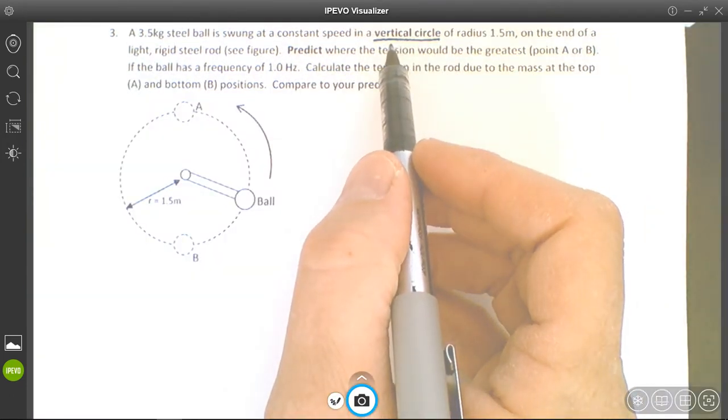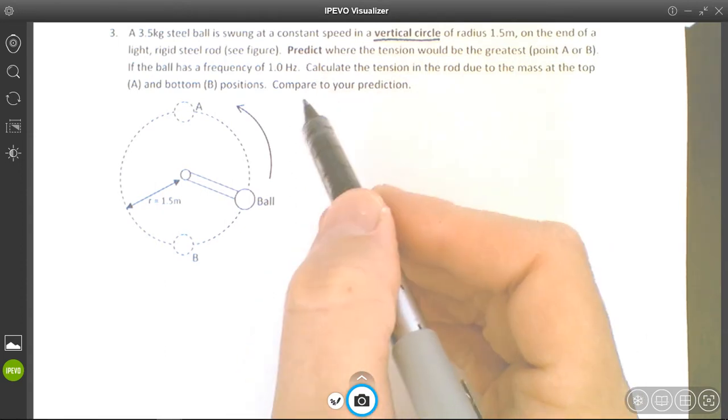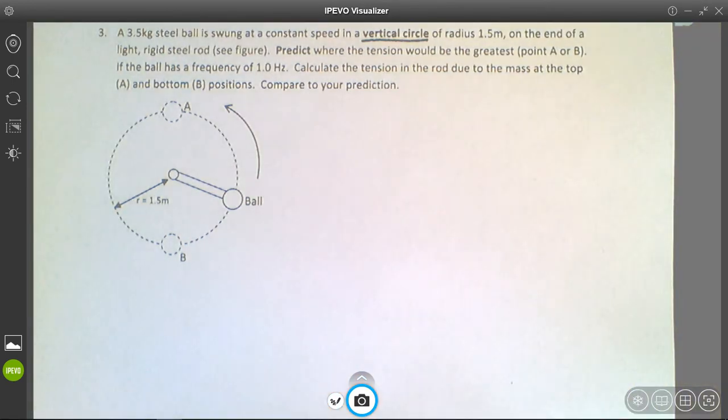The previous example showed you a horizontal plane where friction causes the centripetal force. In another question, there was a car on a bank that shows you how the normal force, or the radial component of the normal force, causes the centripetal acceleration.